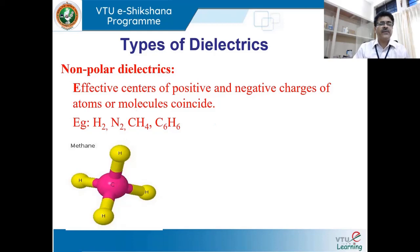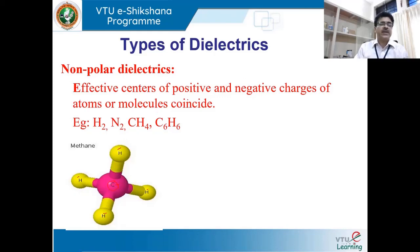Take the example of methane, CH₄. Carbon is the central atom and there are four hydrogen atoms bonded at equal distances. Carbon is considered positively charged and hydrogens are negatively charged. The effective center of all negative charges and the effective center of positive charges overlap, so methane is a non-polar molecule.